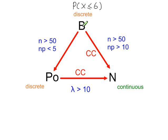If you approximate a binomial distribution with a Poisson, so if you're going along this path in the triangle, then there is no continuity correction to apply. So P(X ≤ 6) is still P(X ≤ 6) in the Poisson distribution. Continuity corrections are only applied along here and here.